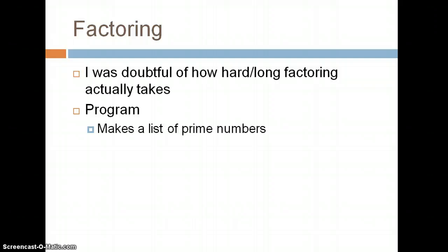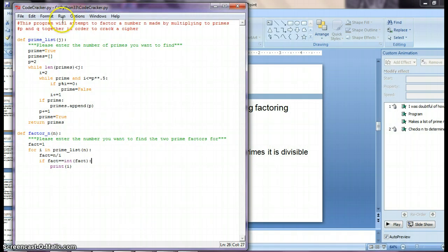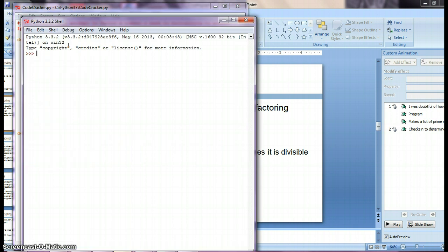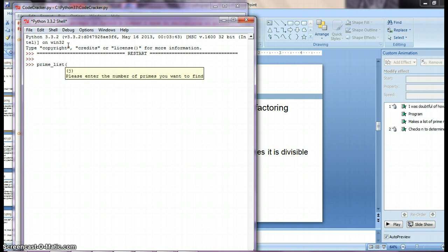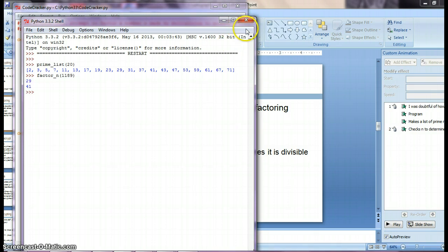So I wrote a program that makes a list of the prime numbers and then checks n to determine which primes it is divisible by. First, let's check the value of 1189. Make a list of the first 20 prime numbers, factor 1189. That went in the blink of an eye, so my message to whomever I'm sending it probably isn't that safe.